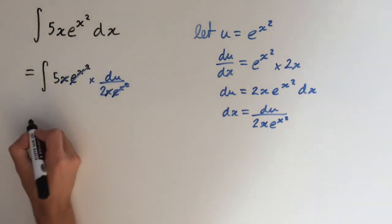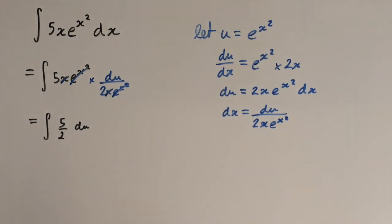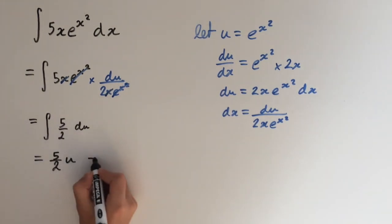And what are we left with? Well, we're just left with integral of 5 over 2 du. And this is a lot nicer. So this gives us 5 over 2u plus c.